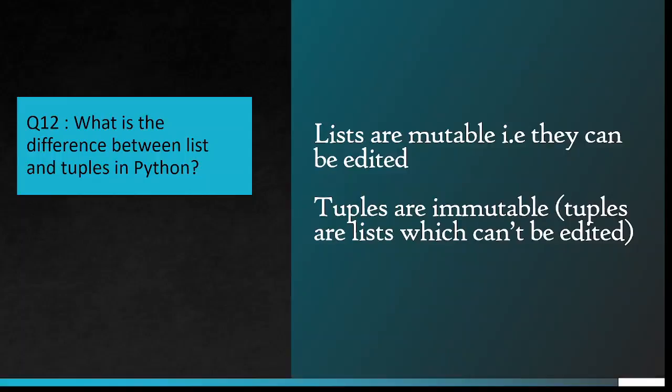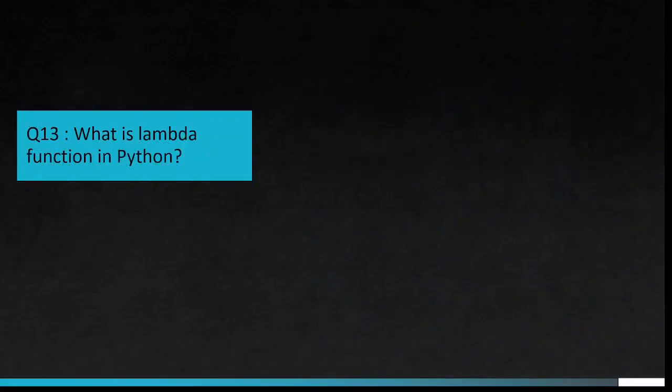Question number 12: What is the difference between list and tuples in Python? Lists are mutable, that is they can be edited. Tuples are immutable. Tuples are lists which can't be edited. Question number 13: What is lambda function in Python?